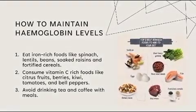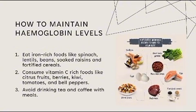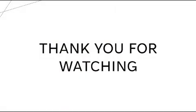I'm Afshan and I'm telling you how to maintain hemoglobin levels. Eat iron-rich foods like spinach, lentils, beans, soft raisins, and fortified cereals. Consume vitamin C-rich foods like citrus fruits, berries, kiwi, tomatoes, and bell peppers. Avoid drinking tea and coffee with meals. That was all about the presentation on the determination of hemoglobin. Thank you for your time and attention.